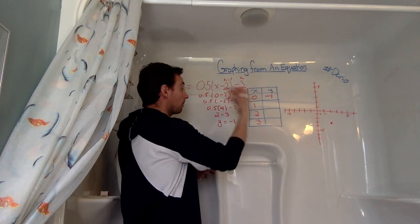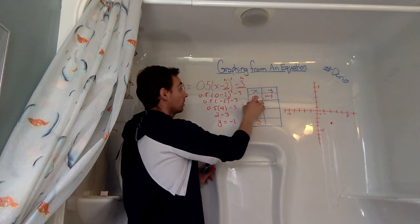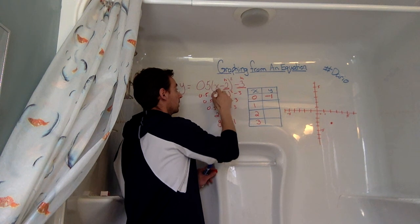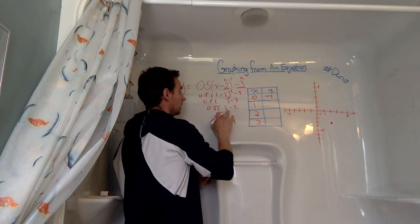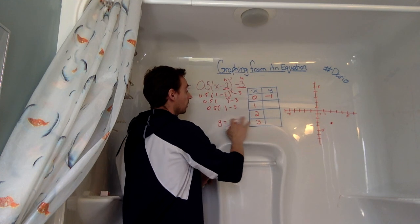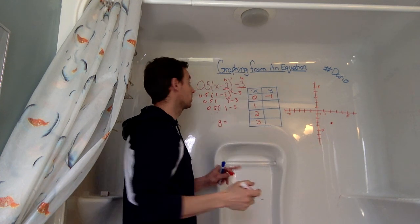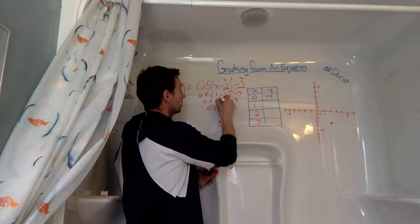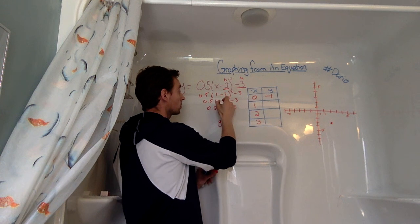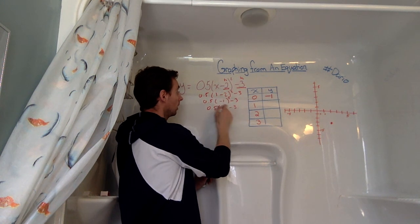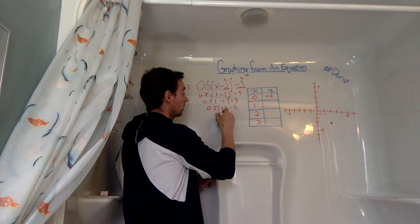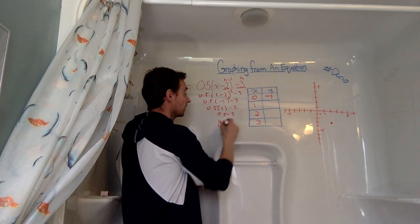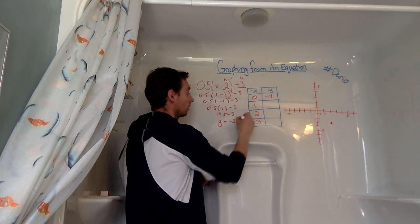And so now I'm going to repeat my process, but I'm going to replace it with 1. And then we're going to figure out what our new y value is. So I'm going to go over here, and so 1 minus 2 gives us negative 1. Negative 1 squared gives us 1. Half of 1 is 0.5. 0.5 minus 3 gives us negative 2.5.